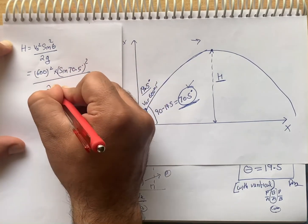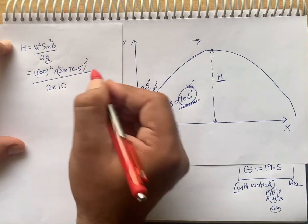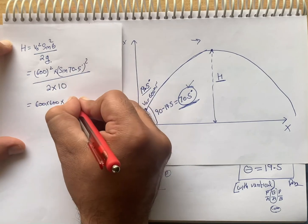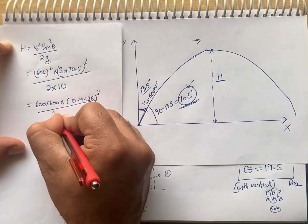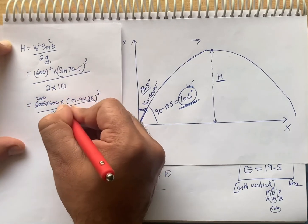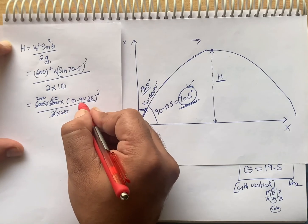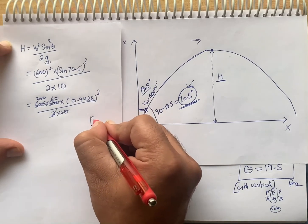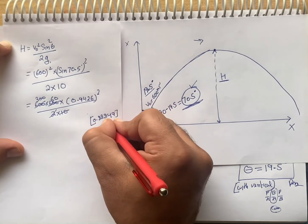The plane must fly above the maximum height of the shell to avoid being hit. The formula for maximum height is H = V0² sin²θ / 2g. Here theta will be 70.5 degrees. Initial velocity of the gun is 600, so: H = 600² × sin²(70.5°) / (2 × 10).